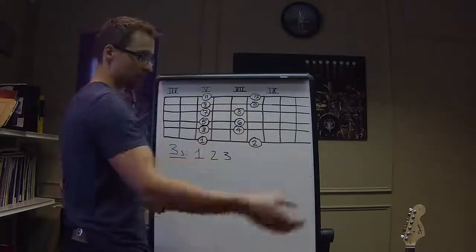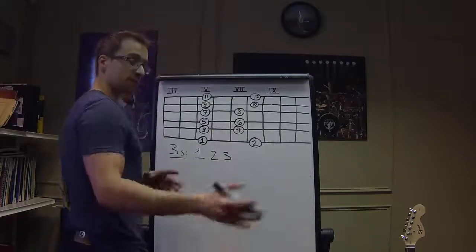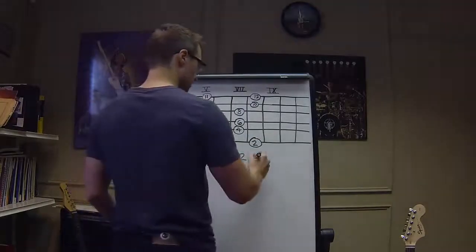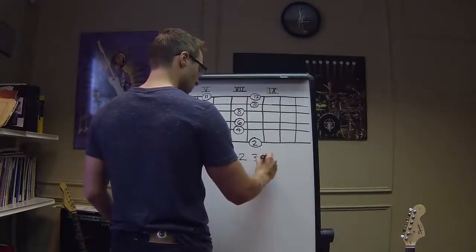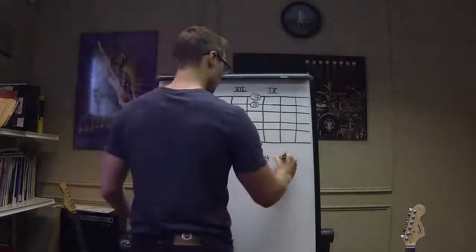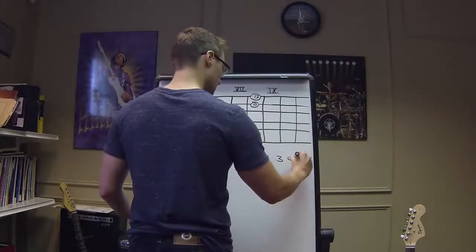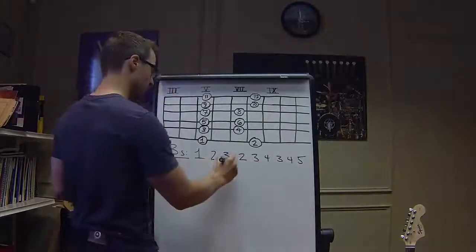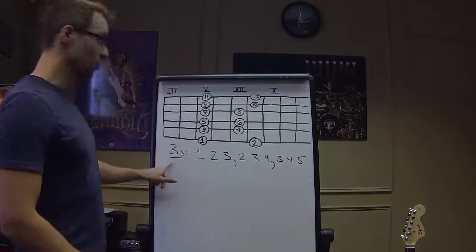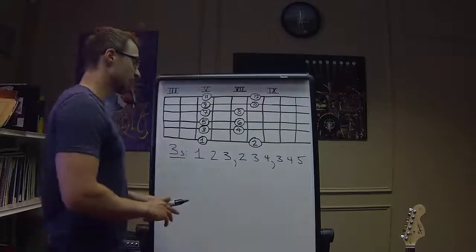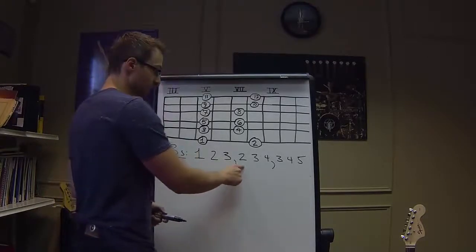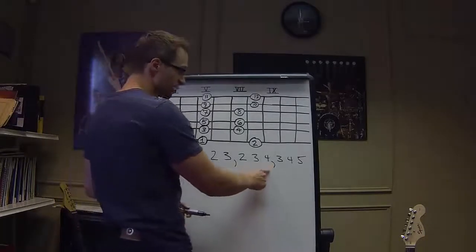This is where things diverge or change from our original scale. Instead of continuing on to 4, 5, 6, what we're going to do is we're going to take a step backwards. We're going to go back to 2. Now, we're going to keep going forward for a little bit. So, we're going to go 2, 3, 4. Now, we've played another 3 notes. We're going to take a step backwards. So, we're going to go 3, 4, 5. And, we're going to continue in this manner.